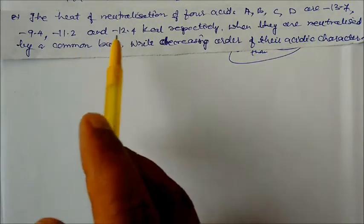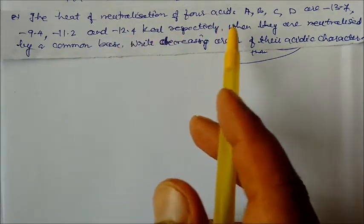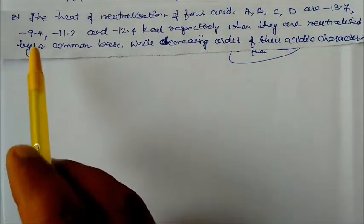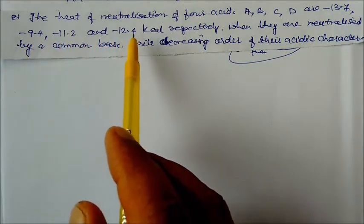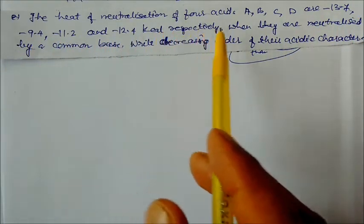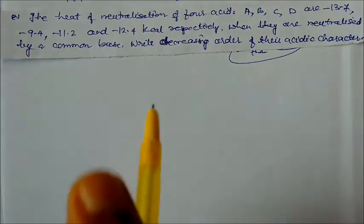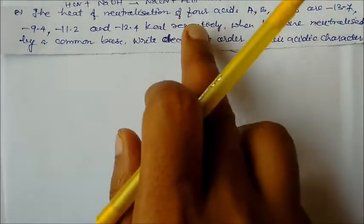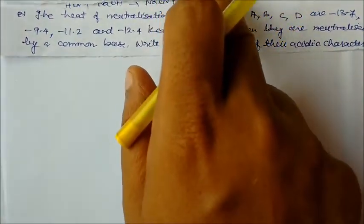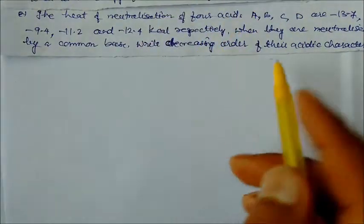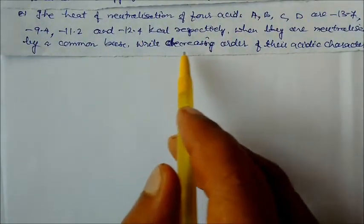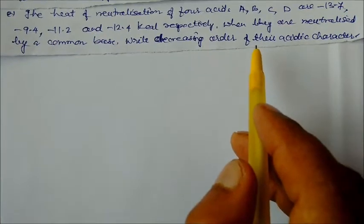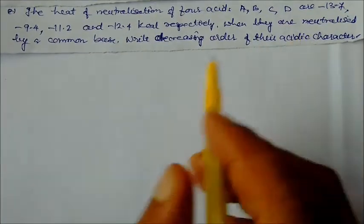Second question: the heat of neutralization of four acids A, B, C, D are 30.7, 9.4, 11.2, and 12.4 kcal respectively when neutralized by a common base. We have to write the decreasing order of their acidic characters.